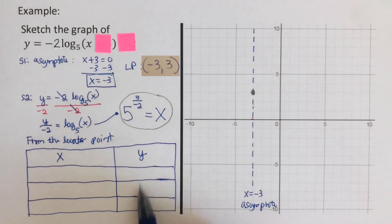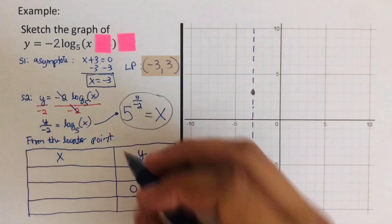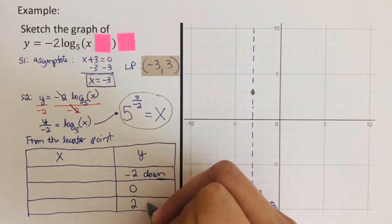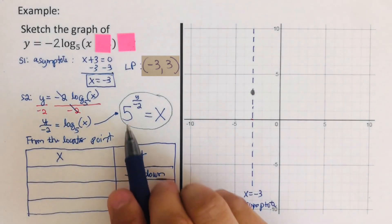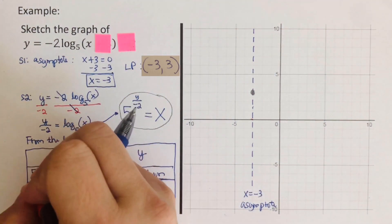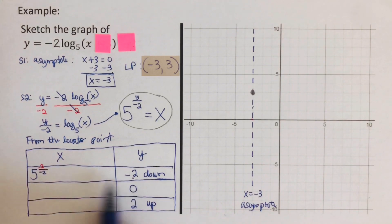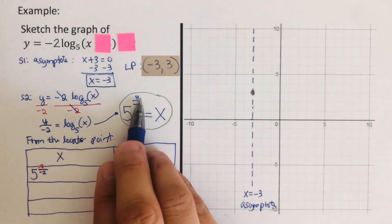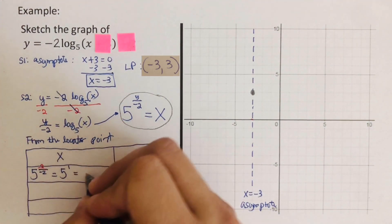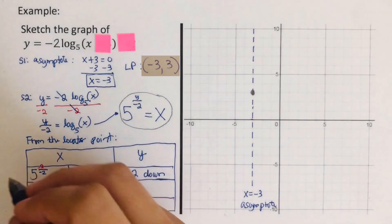Since a is 2, we write 0 in the middle for y, go down 2 to get negative 2, and up 2 to get positive 2. Now we plug these into the equation. For y equals negative 2: 5 to the power (−2/−2) equals 5 to the power 1, which equals 5 — we go 5 to the right from the locator point. We do the same for y equals 0 and y equals 2 to complete the table.